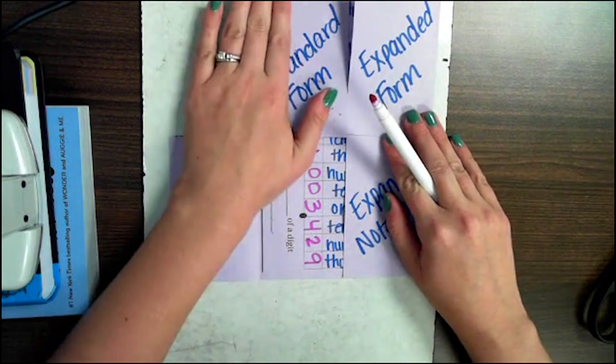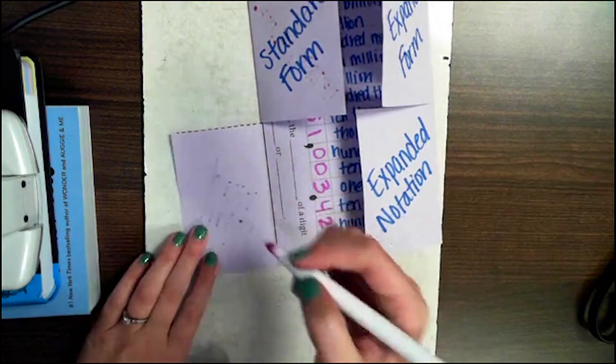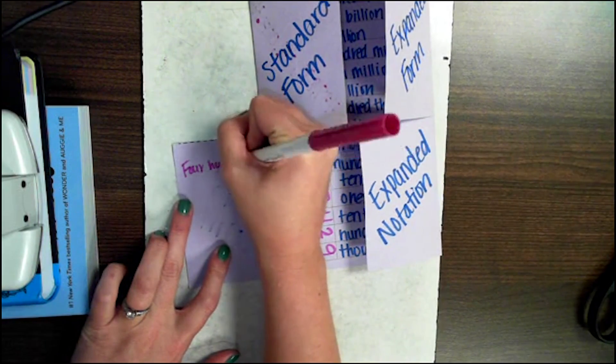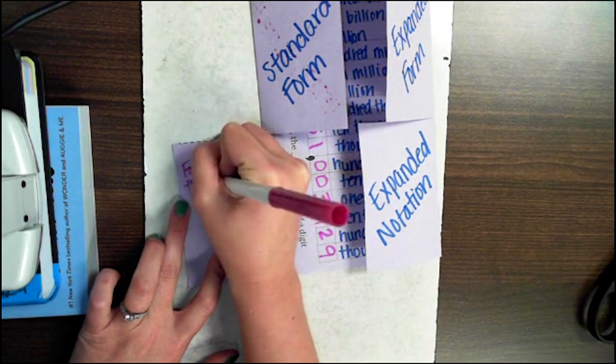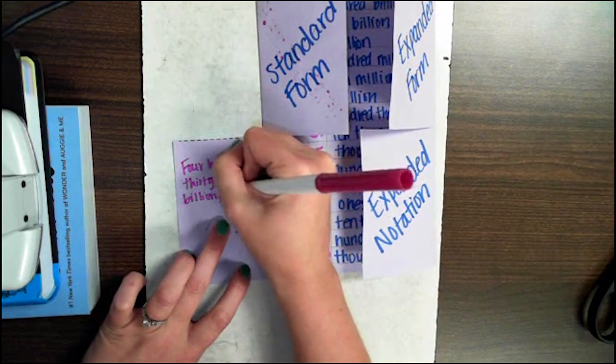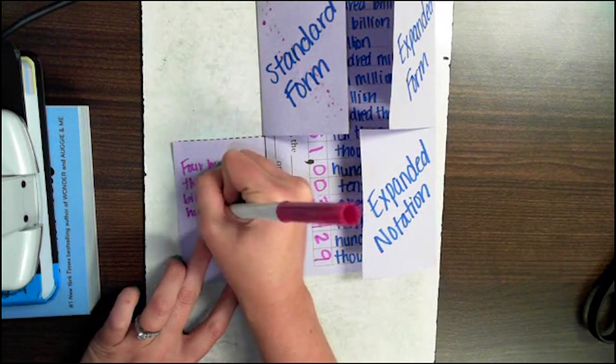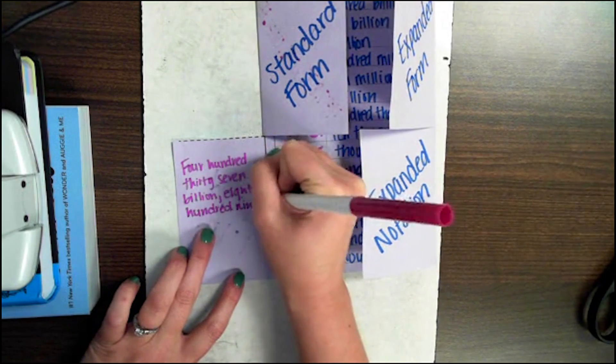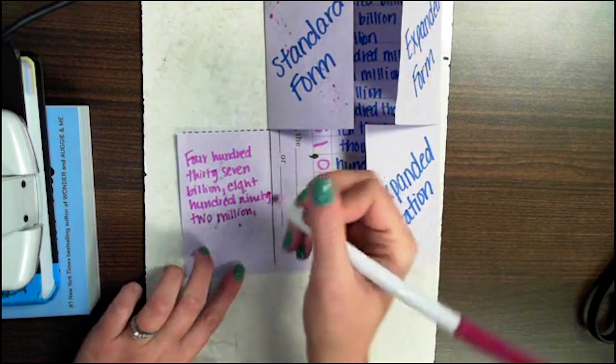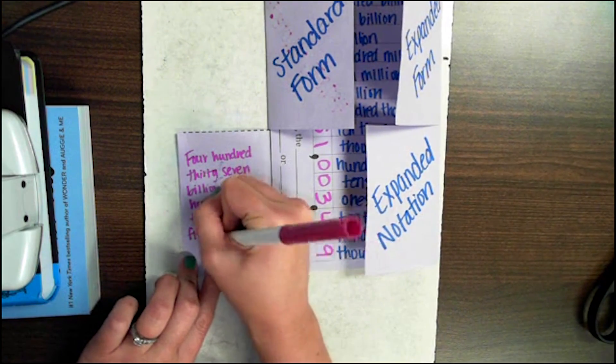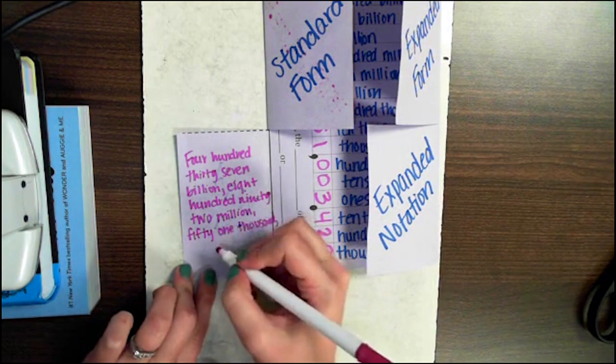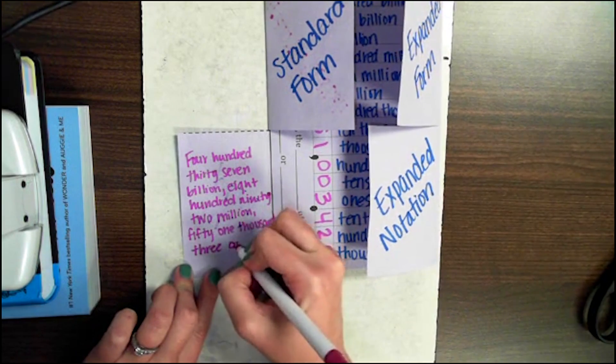Looking at word form, we're going to write this using words. So we have four hundred thirty-seven billion, eight hundred ninety-two million, fifty-one thousand, three and...